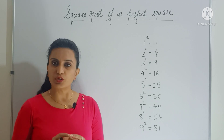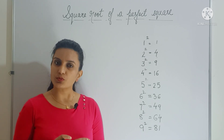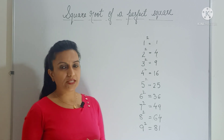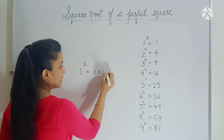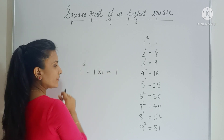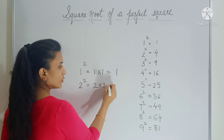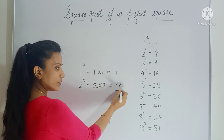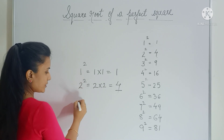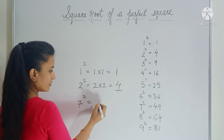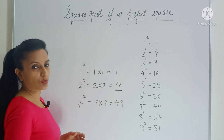Now you must be thinking what is a perfect square. A perfect square is the square of any number. For example, one square: one into one gives you one, so one is a perfect square. Two square is two into two, which gives you four, so four is a perfect square. You can take any number — for example, seven. Seven square is seven into seven, which gives you 49, so 49 is a perfect square.